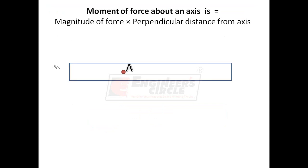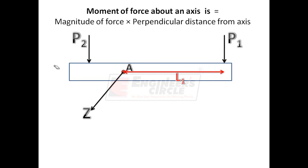Consider point A in a body. The loads acting on the body are P1 and P2. Let us take the moment of these loads about the Z axis. The perpendicular distance of load P1 from the Z axis is L1 and the perpendicular distance of load P2 from the Z axis is L2. The moment of P1 about the Z axis is P1 times L1, and the moment of P2 is P2 times L2.